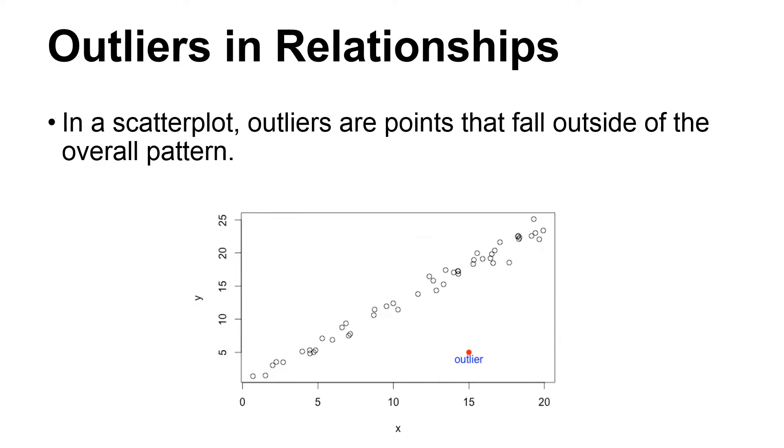For a pair of variables, an outlier is a point that falls outside of the overall pattern in the relationship, which can be examined using a scatter plot.